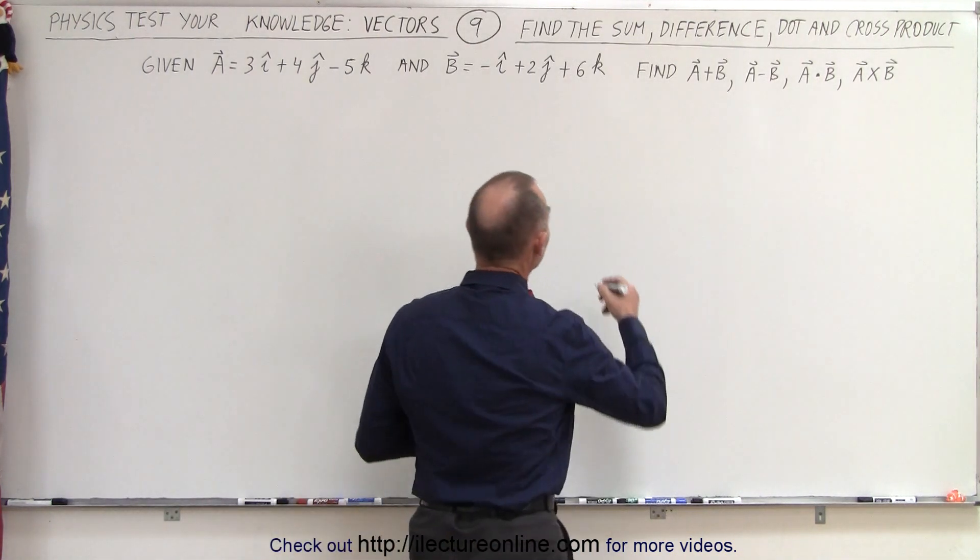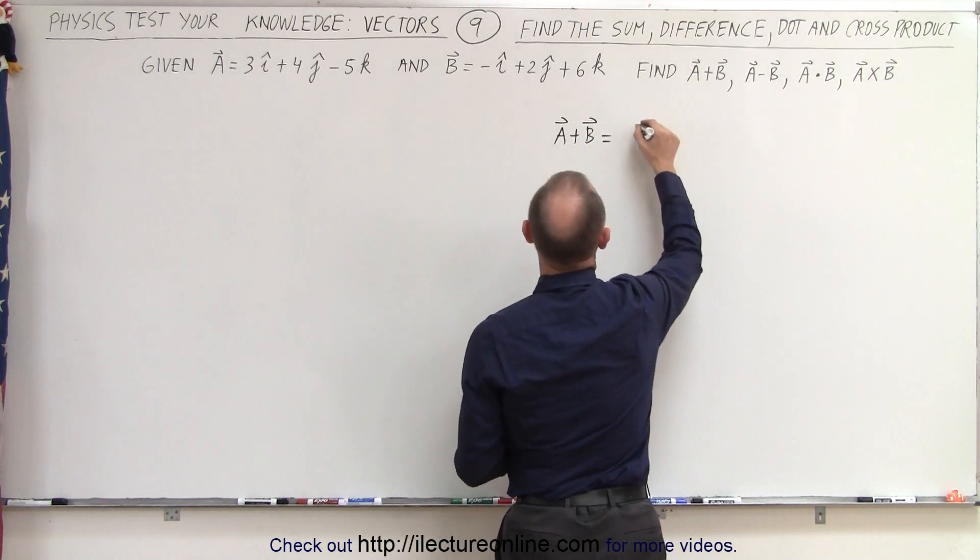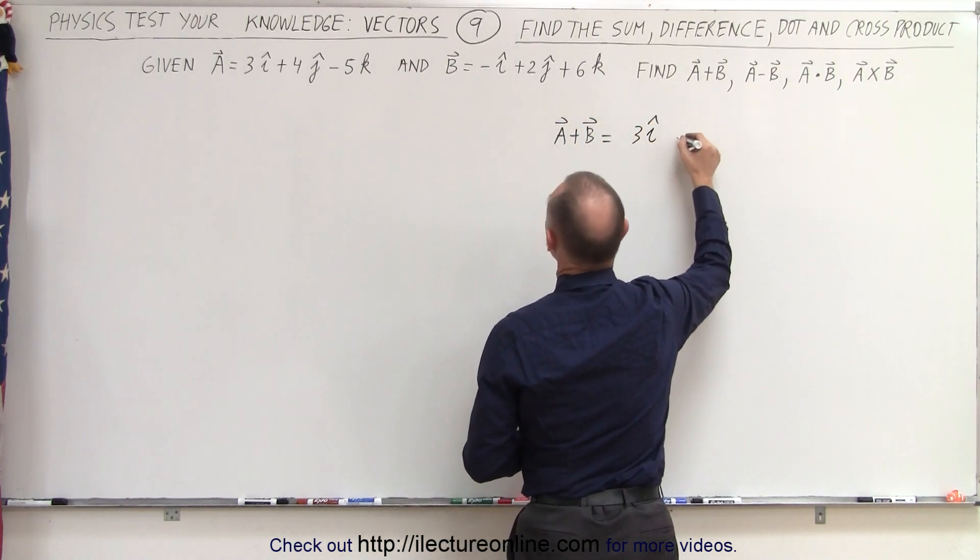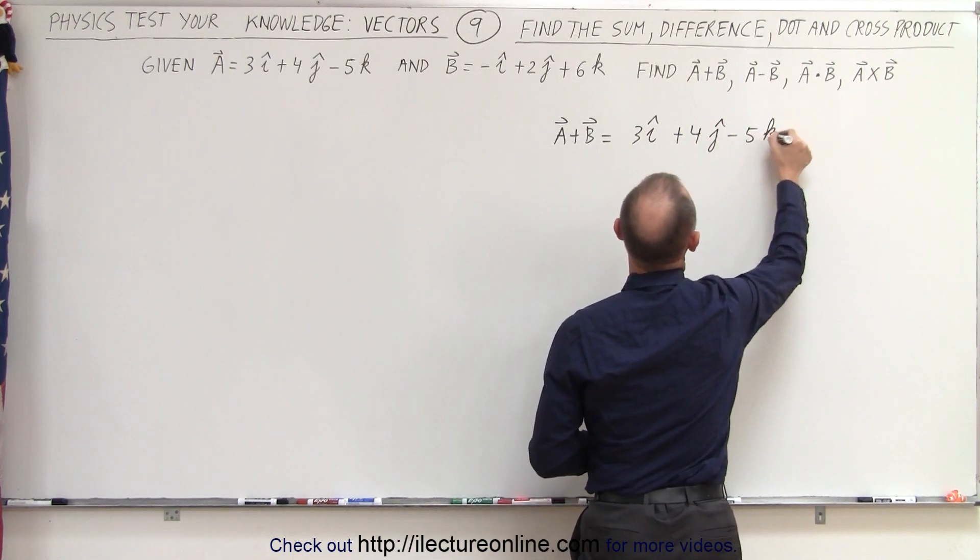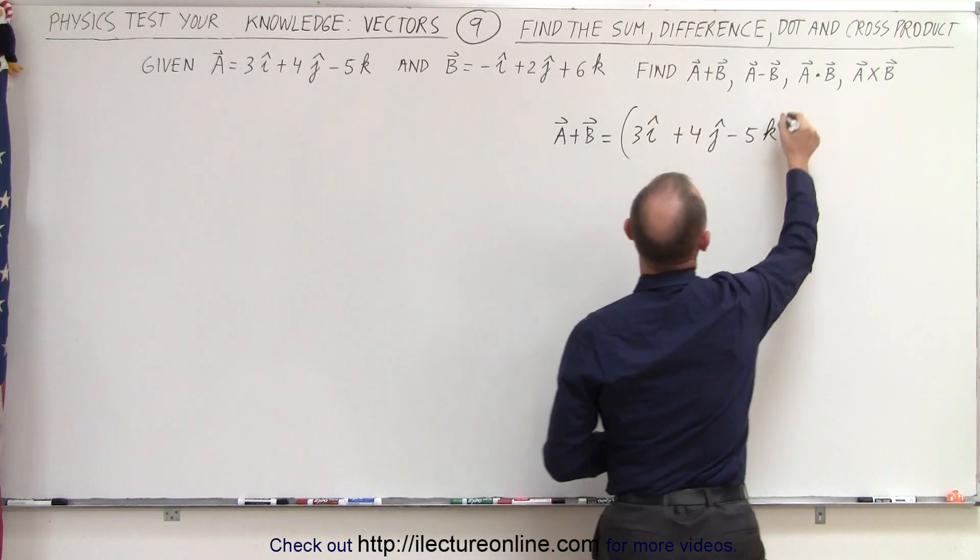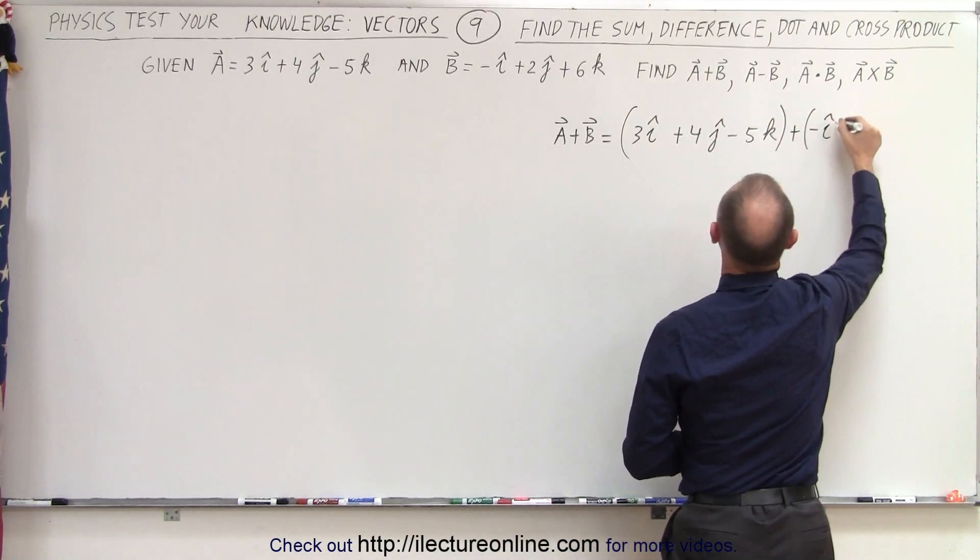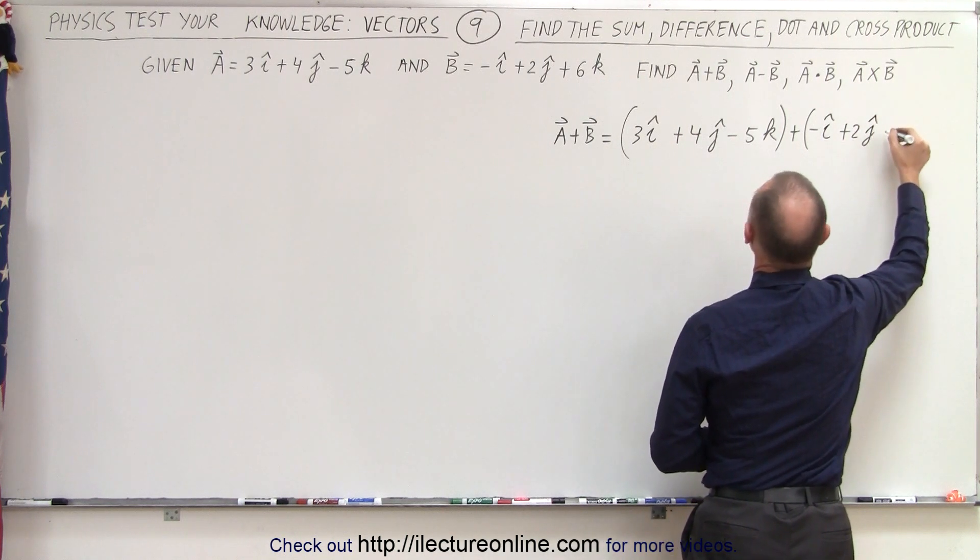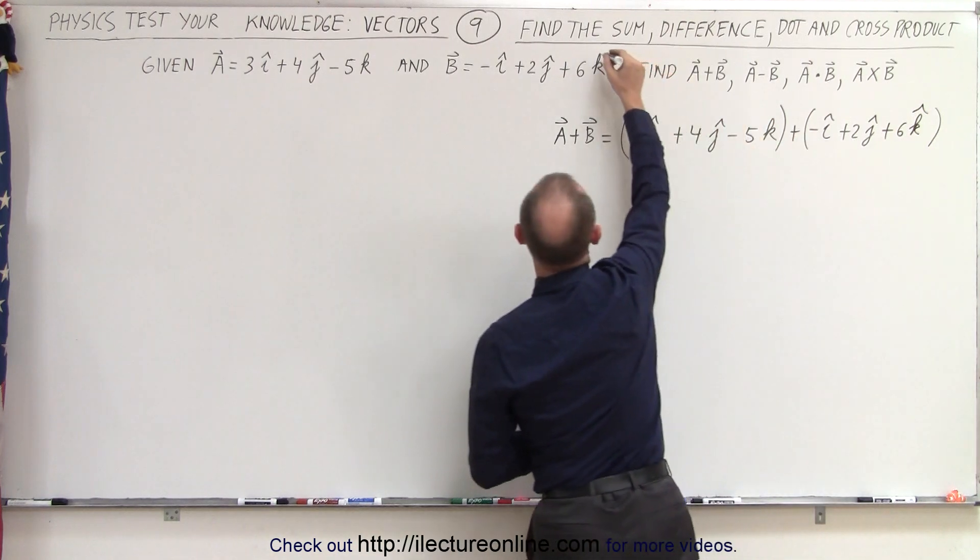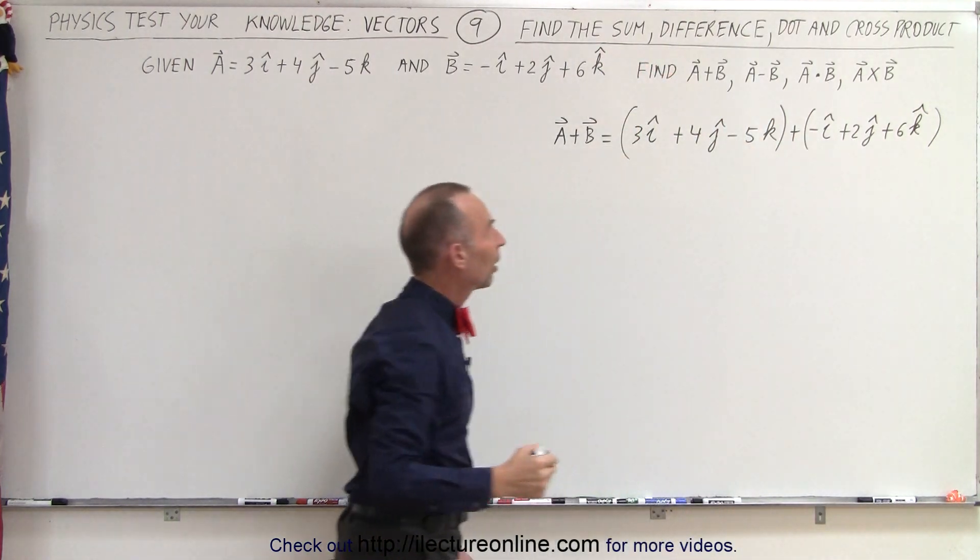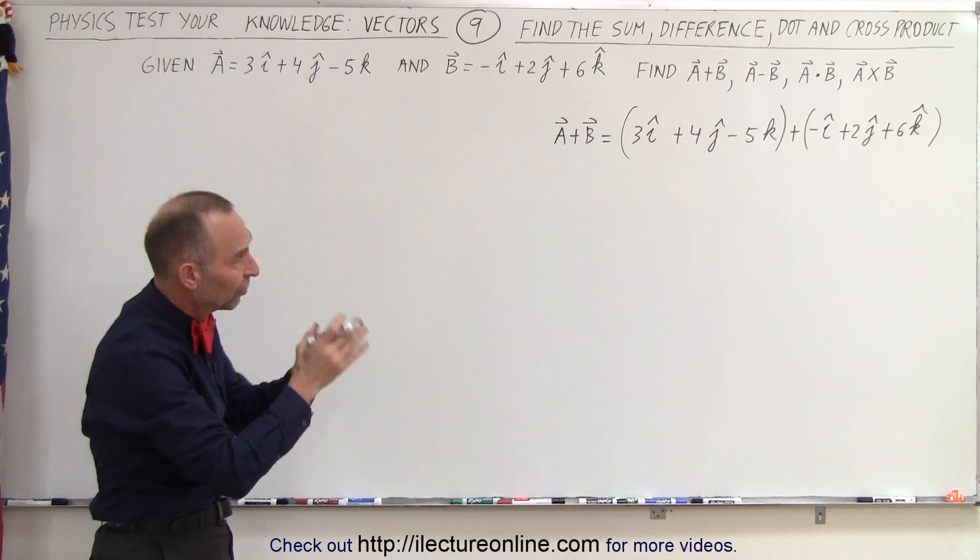First, let's do the sum, a plus b. This is equal to, we have 3i plus 4j minus 5k, and then we add to that the second vector, which is minus i plus 2j and plus 6k. And then all we have to do is add the x components together, the y components together, and the z components together.